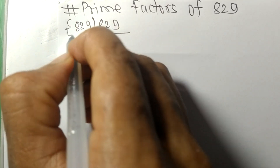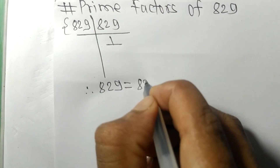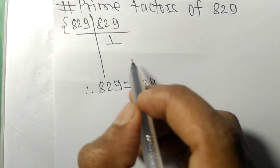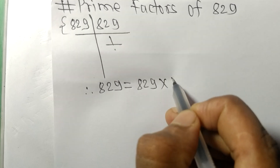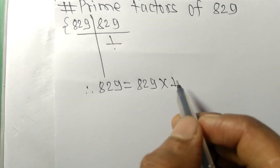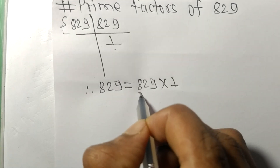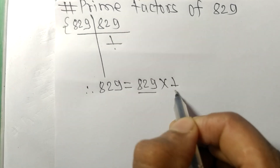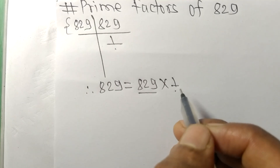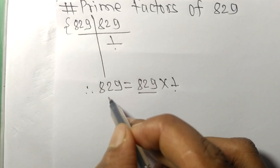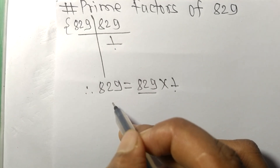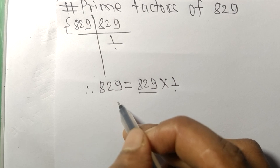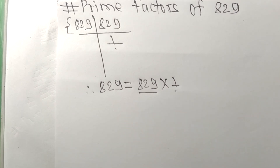From this side it is 829, and from here it is 1, so 829 and 1 are the prime factors of 829. That's all for today — thanks for watching.